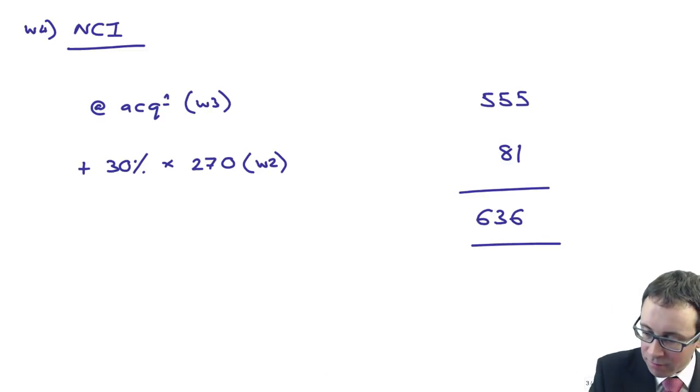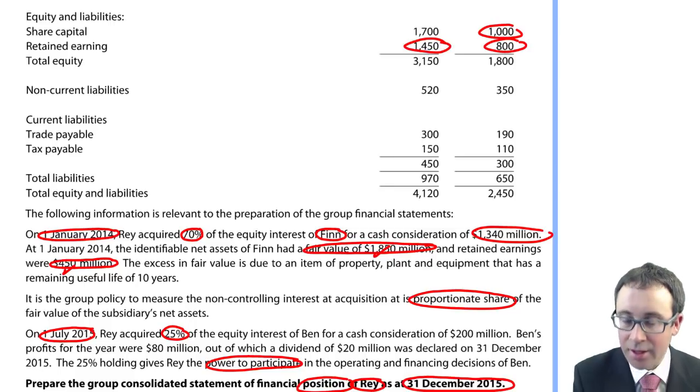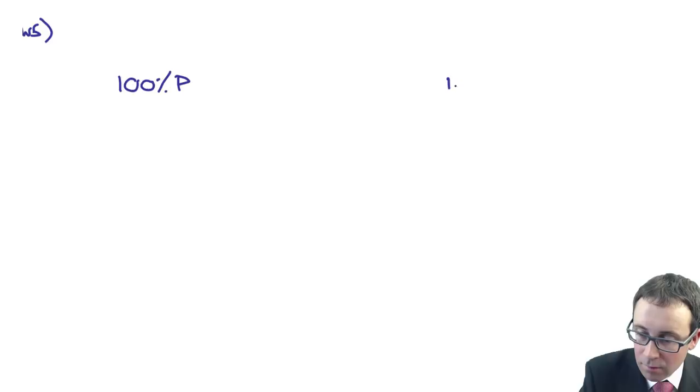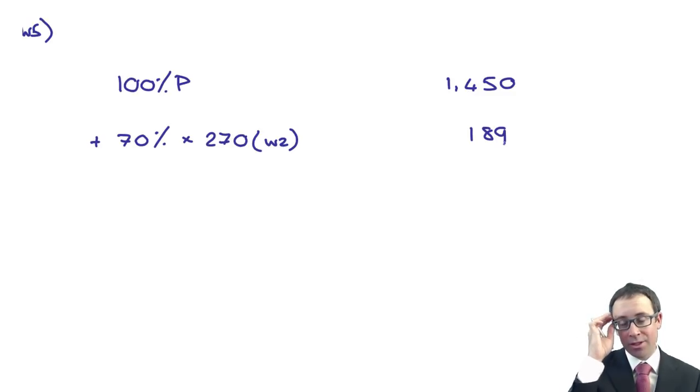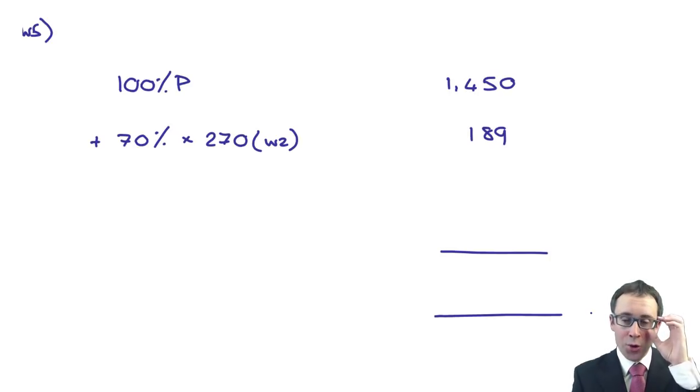Working number five is your group retained earnings. So we put in 100% of the parent's retained earnings, the 1,450. I then add on 70% of the post acquisition profits. The marker will be able to identify what you've done if you label things up clearly. So you've got 70% of 270 is 189. Always leave yourself plenty of space in working five because when you get to real exam questions, the adjustments in there are huge.